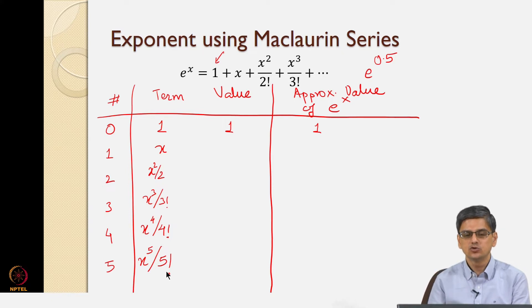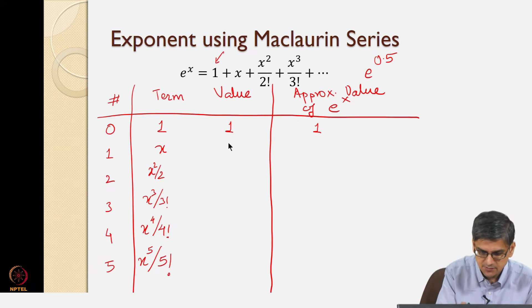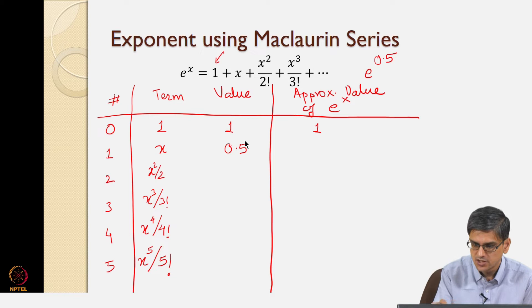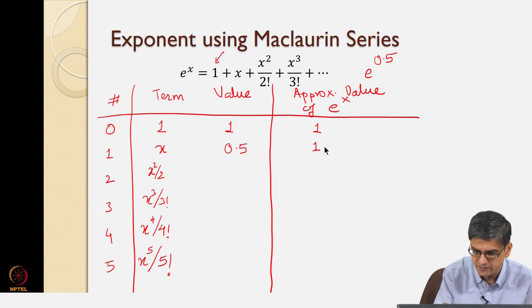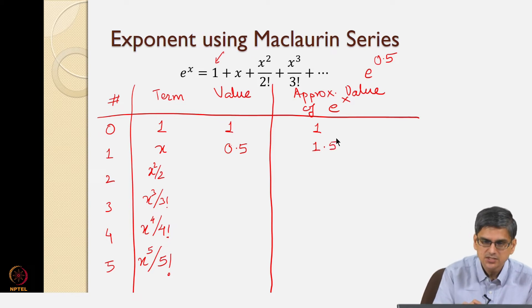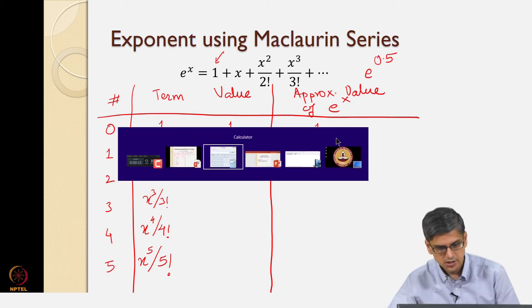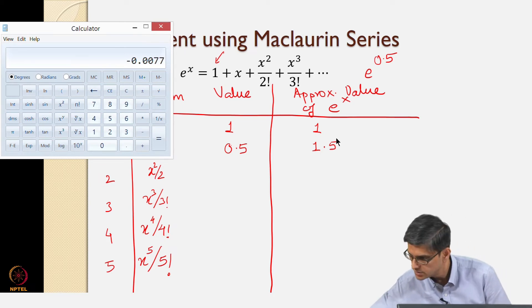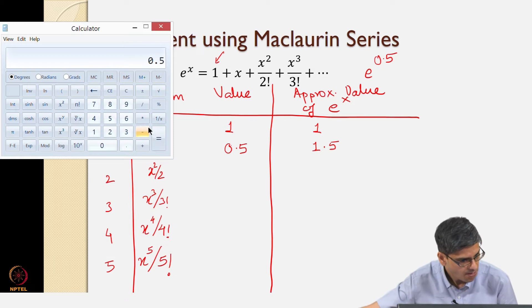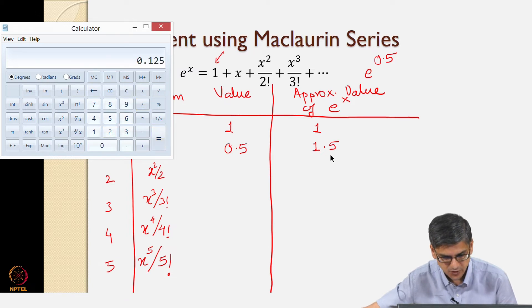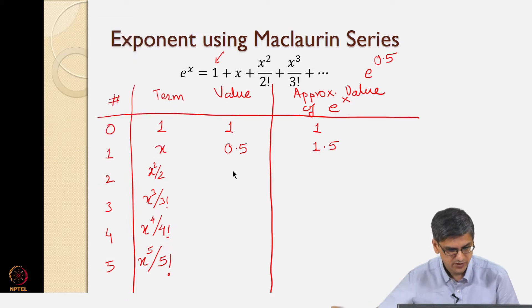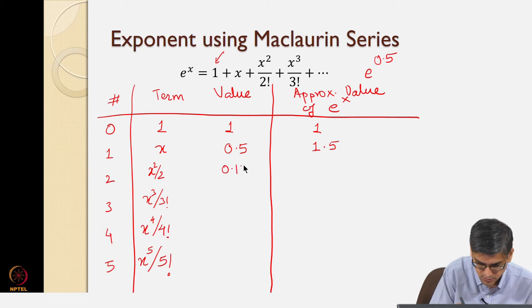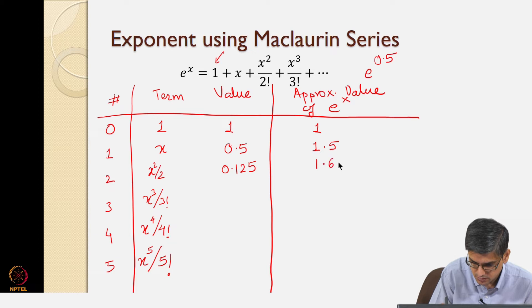We will keep finding those values and keep adding them to the previous guess. So x is 0.5. The approximate value of e to the power x starting with 1 plus 0.5 is 1.5. Now x squared divided by 2 factorial is 0.5 squared divided by 2, which equals 0.125. Adding 0.125 to 1.5 gives us 1.625.